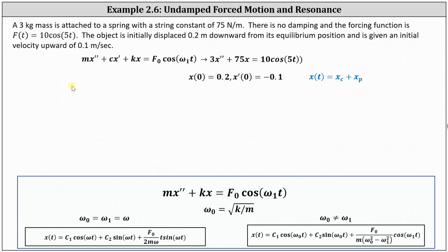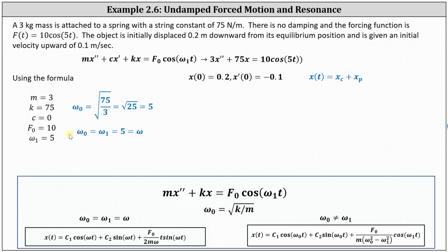Let's list all the given information: mass m = 3, spring constant k = 75, no damping so c = 0. From the forcing function F(t) = 10 cos(5t), we have F₀ = 10 and ω₁ = 5. We now determine ω₀ = √(k/m) = √(75/3) = 5. Notice that ω₀ equals ω₁, both equal to 5, so we call this ω and use the resonance general solution on the left.